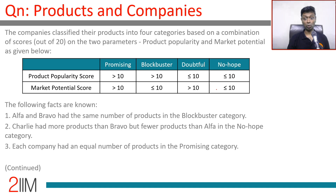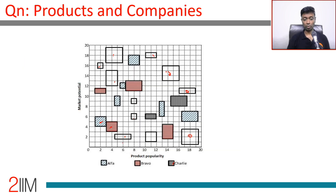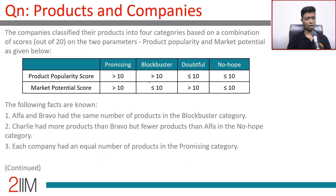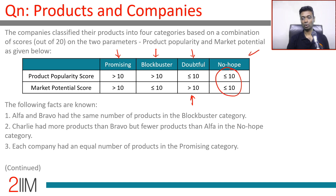The companies classify their products into four categories based on a combination of scores — product popularity score and market potential score, each ranging from zero to twenty. If both are greater than 10, it is 'Promising.' If product popularity is greater than 10 but market potential is less than or equal to 10, it is 'Blockbuster.' If product popularity is less than or equal to 10 but market potential is greater than 10, it's 'Doubtful.' If both are less than or equal to 10, it's 'No Hope.'